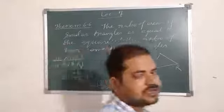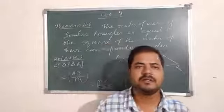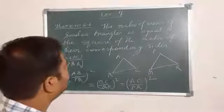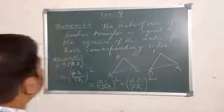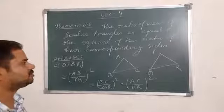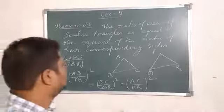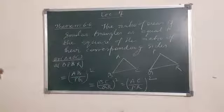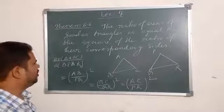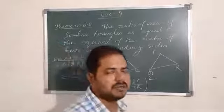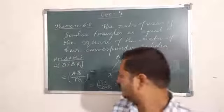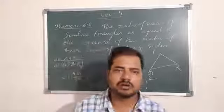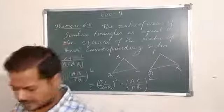So this is the statement of this particular theorem. The ratio of the areas of similar triangles is equal to the squares of the ratio of their corresponding sides. As triangle ABC and triangle PQR, if they are similar, then area of ABC upon area of PQR equals AB/PQ whole square, BC/QR whole square, and AC/PR whole square. So now we are going to prove this theorem. Let us consider the proof.